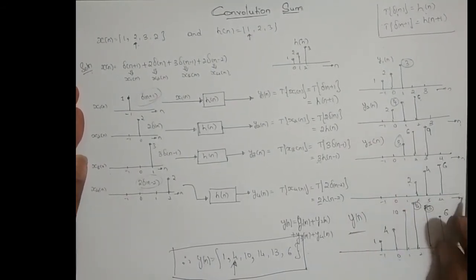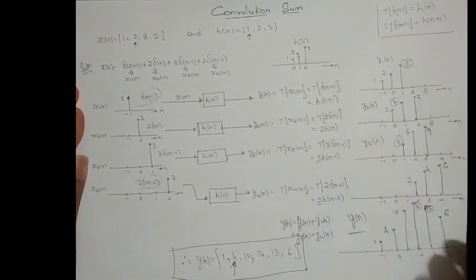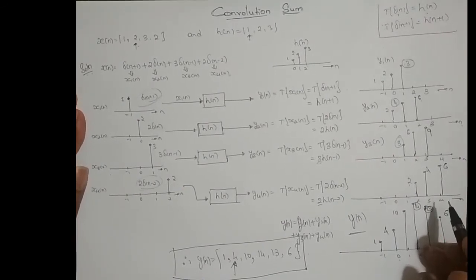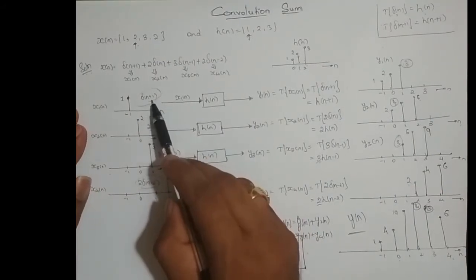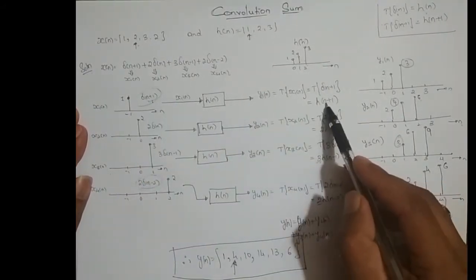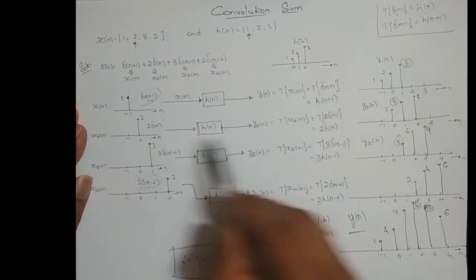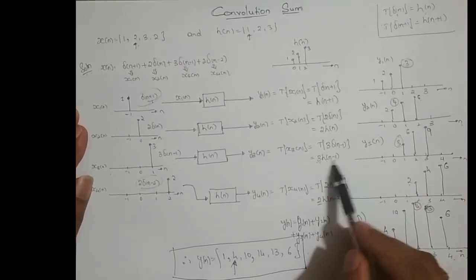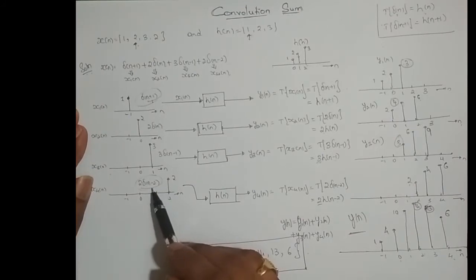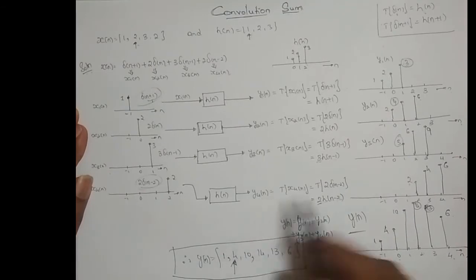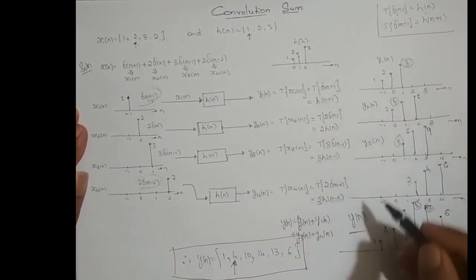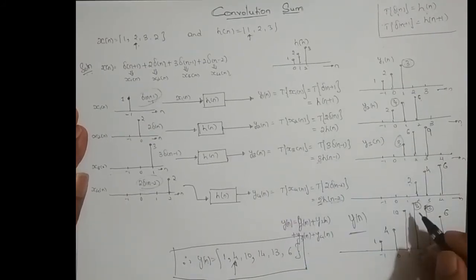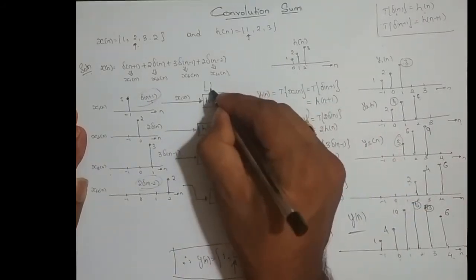In this process, two properties were happening: the linearity property and the time-shift property. The time shift was visible when input shifted left one time, the output also shifted left one time; when input shifted right one time and amplitude scaled by 2, output also shifted right one time and amplitude scaled by 2. These two properties — linearity and time-shift — are why we call this system an LTI system.